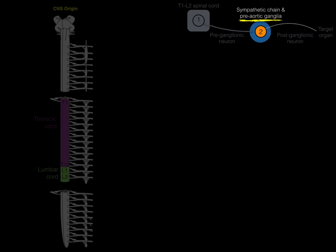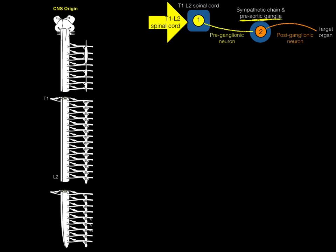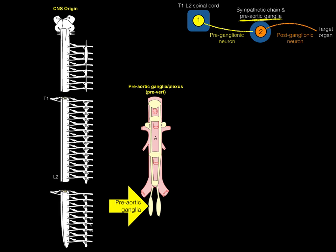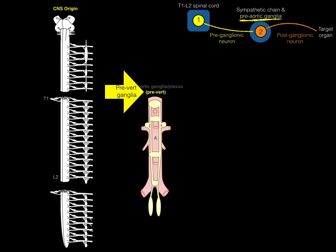Now let's go to the preaortic ganglia. They are called preaortic because they are in front of the aorta, and also called prevertebral because they are in front of the vertebrae. By contrast, the sympathetic chain is sometimes called the paravertebral ganglia — para meaning to the side — because the sympathetic chain sits beside the vertebrae. These are synonymous terms you might encounter.